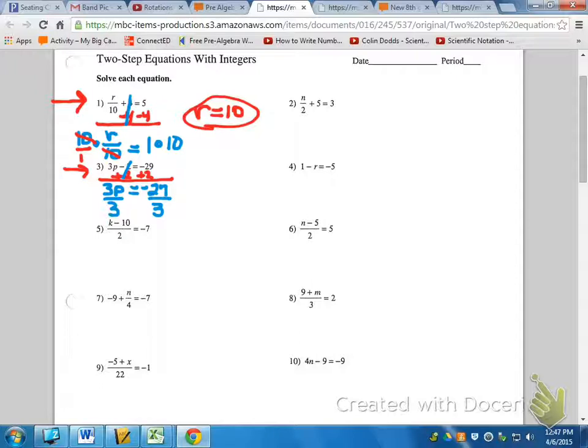That 3 divided by 3 becomes a 1. It's cancelled out. So P is alone, which is our goal. And negative 27 divided by 3 is negative 9. P equals negative 9.